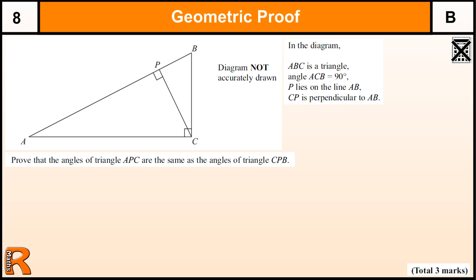To do this, we've got to be very specific in what we write to show which angles are equal to which and why. So we're trying to show that triangle APC has the same angles as CPB.